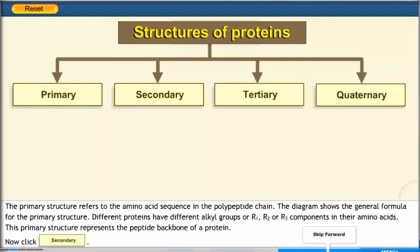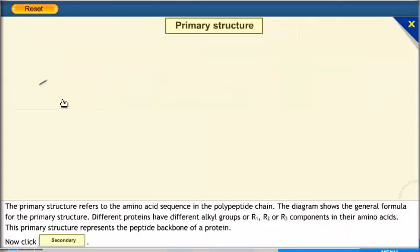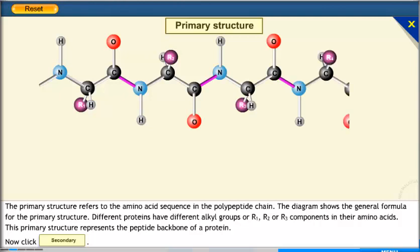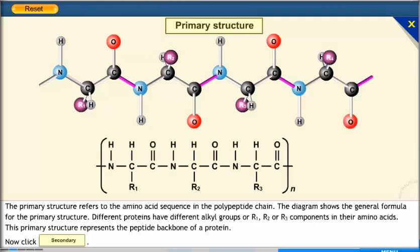The primary structure refers to the amino acid sequence in the polypeptide chain. The diagram shows the general formula for the primary structure. Different proteins have different alkyl groups or R1, R2, or R3 components in their amino acids. This primary structure represents the peptide backbone of a protein. Now click the secondary button.